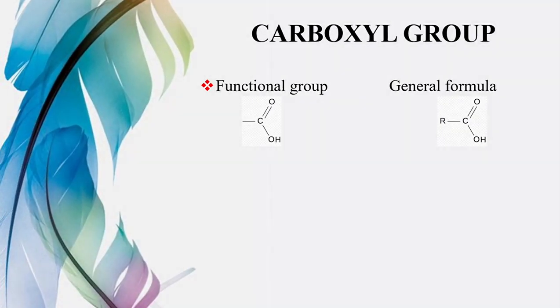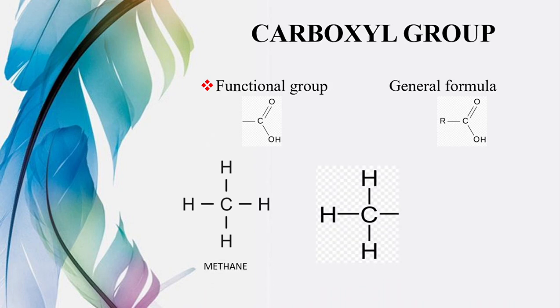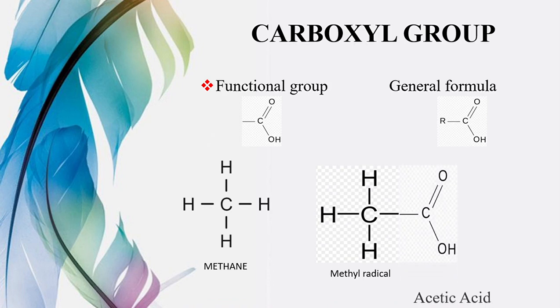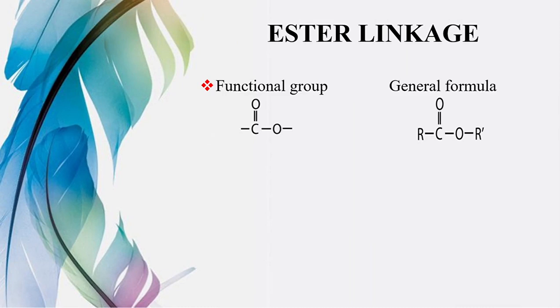Uske baad hai carboxyl functional group — C double bond O, OH. Isi tarike se, humare paas hai methane, removal of one hydrogen makes it methyl radical. Aur yahan par humne humara functional group C double bond O, OH add kiya. To yeh ab kya ban gaya: acetic acid, vinegar.